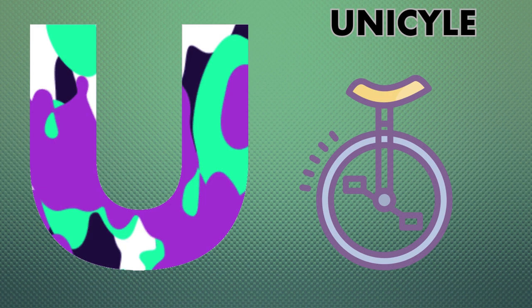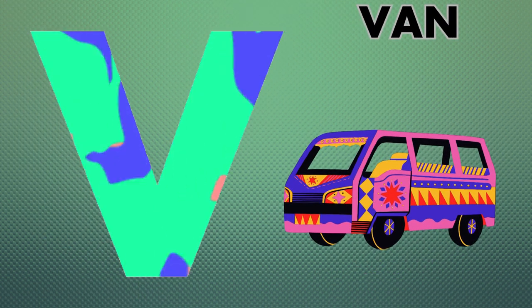U is for unicycle, unicycle. V is for van, van.